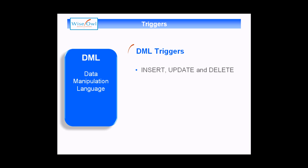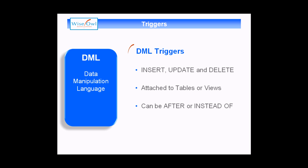These events are associated with tables or views in your database, and DML triggers can be attached to either a table or a view. They can be one of two types: either an after trigger or an instead of trigger, and this video is going to explain how all of that works.